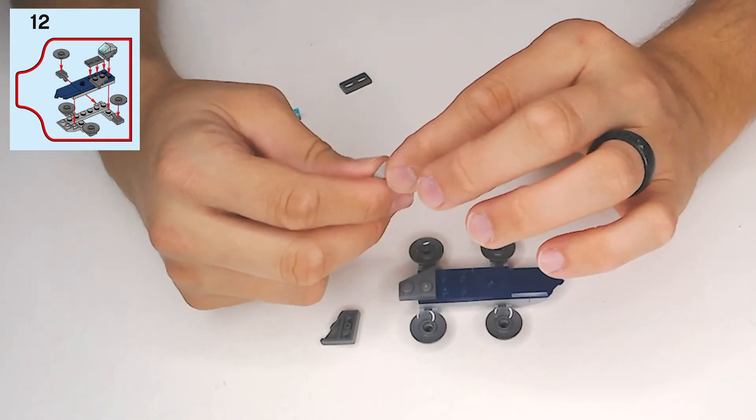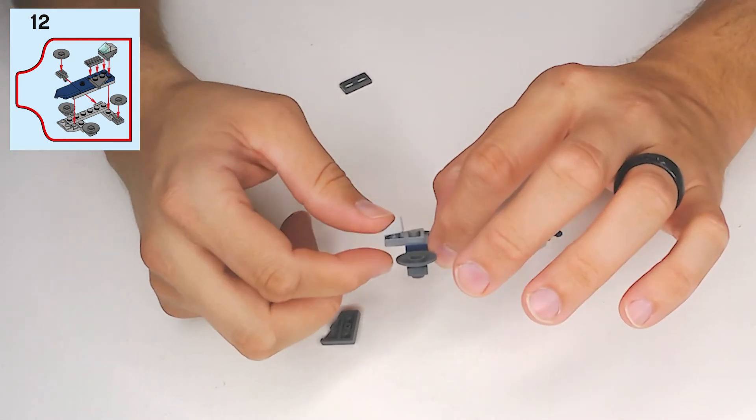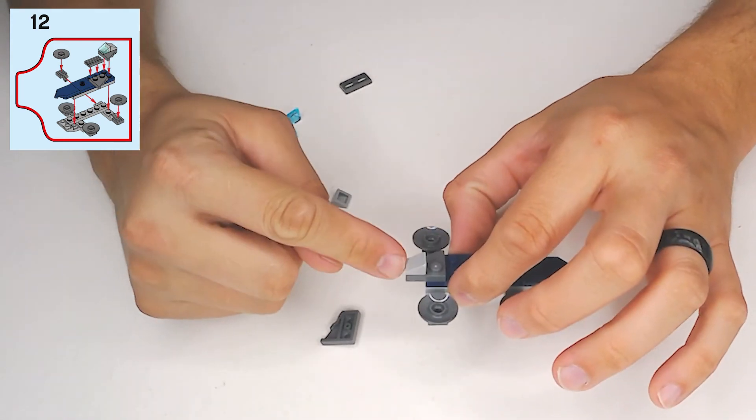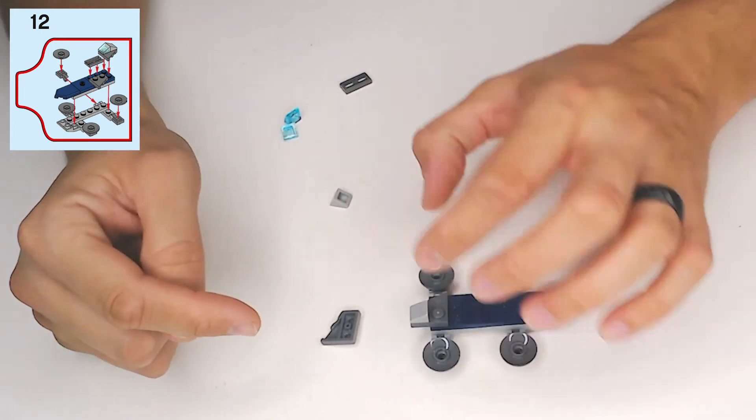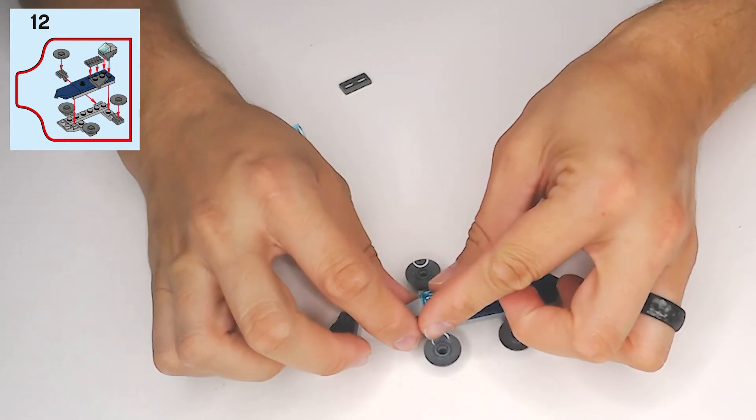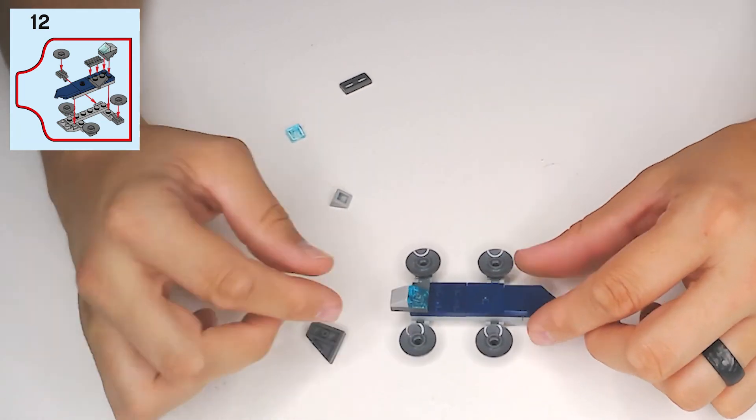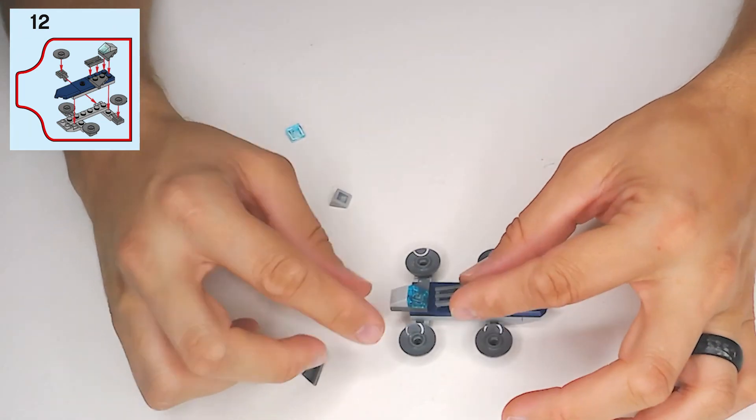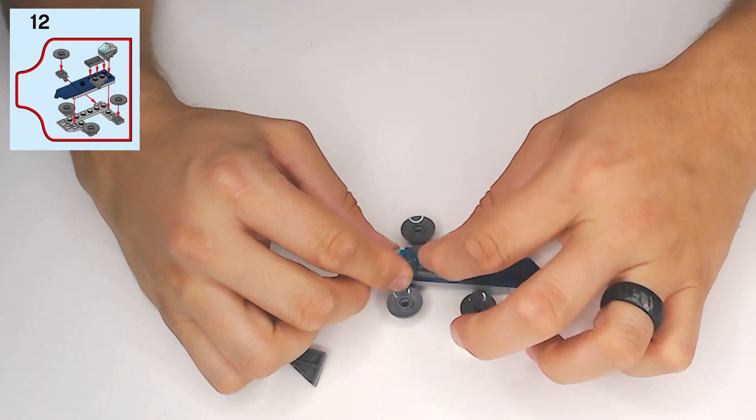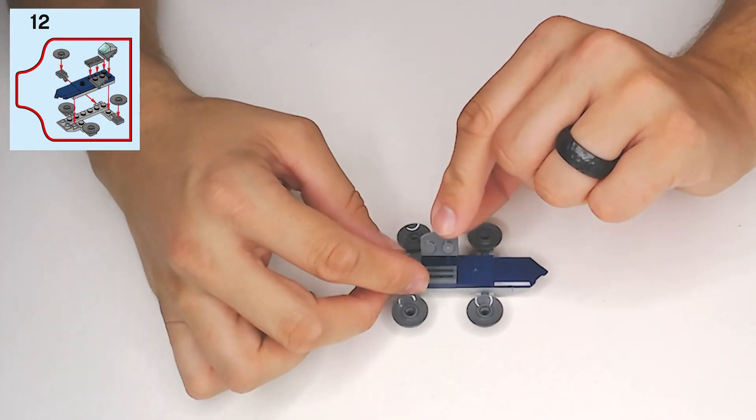Then you're going to get one of these light gray cheese slopes and stick it on. It's hanging over, slide it off, and then take another cheese slope and stick it back. Then in front of them, you have to put one of these one by two grilles, and then you're going to stick this little vent.